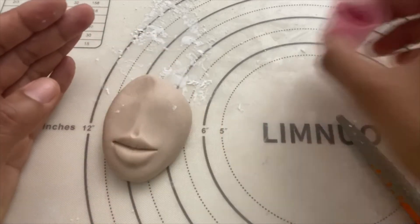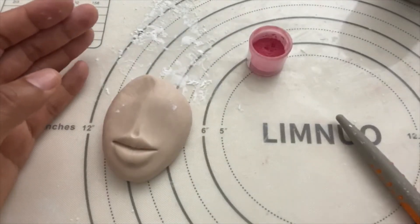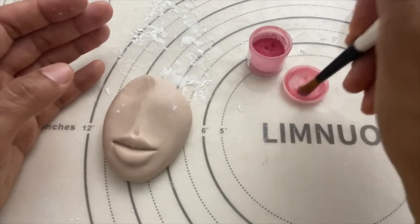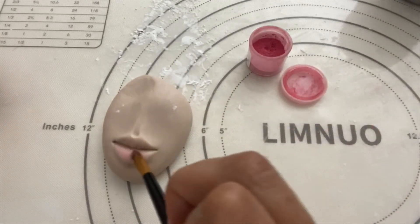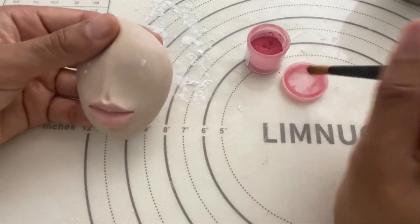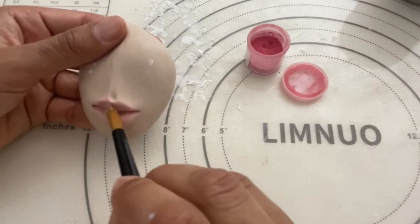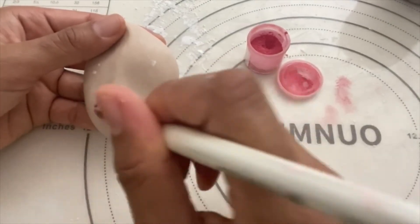Okay, so I just have some petal dust. You could also use gel color mixed with vodka if you want. I'm just going to give her a little blush on her lips, a little darker toward the corners and the center lines.